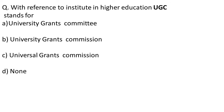UGC stands for — Option A: University Grants Committee, B: University Grants Commission, C: Universal Grants Commission, and D: None. The UGC stands for University Grants Commission, so the correct option is B. I hope you guessed it correctly. Now moving on to the next question.